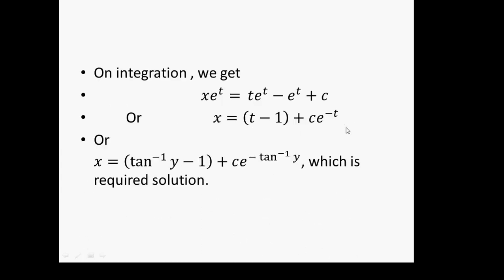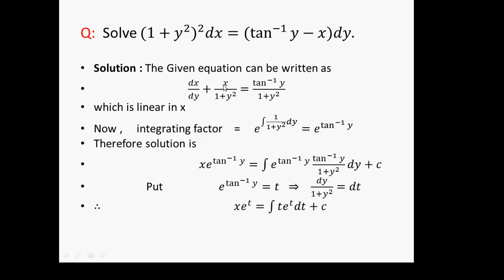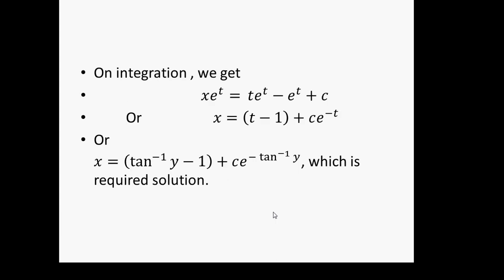The equation is linear in x. So the solution is x · e^(tan⁻¹y) = ∫e^(tan⁻¹y) · (tan⁻¹y/(1 + y²)) dy + C. To solve this integral, put e^(tan⁻¹y) = t, so dy/(1 + y²) = dt. The integral becomes x · e^t = ∫t · e^t dt + C. Integrating by parts with t as first function and e^t as second, we get x = (t − 1) + C · e^(−t). Replacing t by tan⁻¹y, the solution is x = (tan⁻¹y − 1) + C · e^(−tan⁻¹y), which is the required solution.